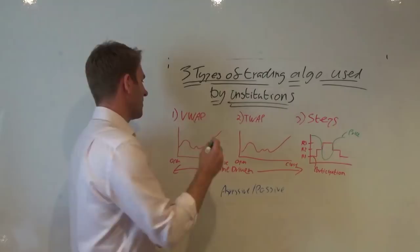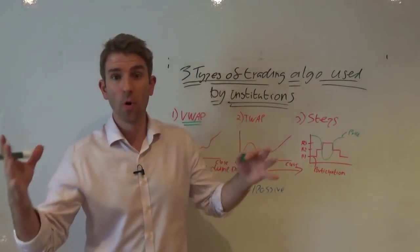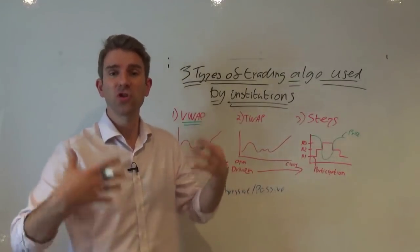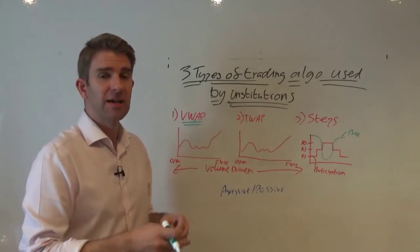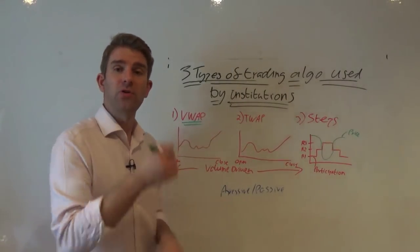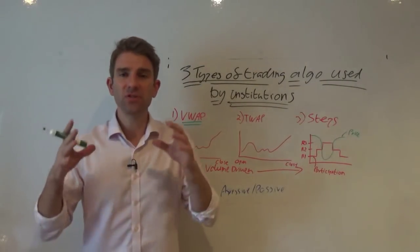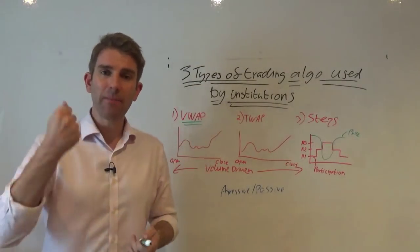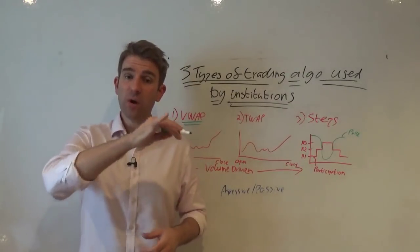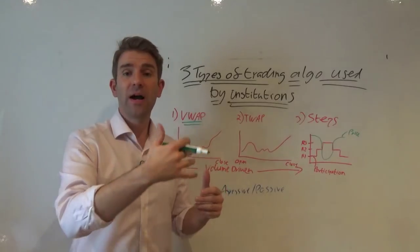The first one we have is VWAP. If you haven't checked out the previous video where I talked about what an algo is, it goes into some basic details there — but ultimately it's a computer-driven execution model rather than someone sitting there tapping away or making a phone call. So the first one is VWAP, which is Volume Weighted Average Price.